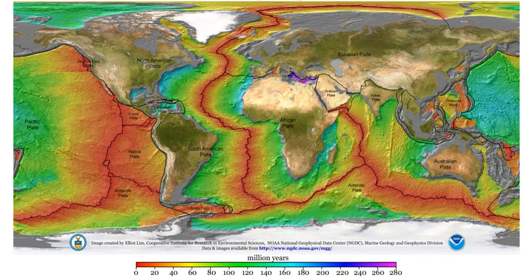Seismic waves are vibrations that travel through the Earth's interior or along its surface. The entire Earth can also oscillate in forms called normal modes or free oscillations of the Earth. Ground motions from waves or normal modes are measured using seismographs. If the waves come from a localized source such as an earthquake or explosion, measurements at more than one location can be used to locate the source.